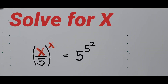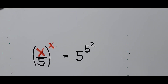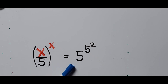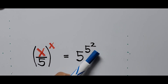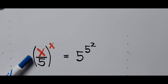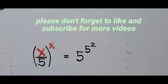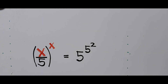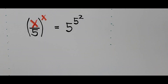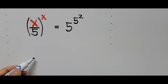Hello everyone, welcome to Quasiano Easy Math. We have here an exponential equation to solve: x divided by 5, to the power of x, is equal to 5 to the power of 5e squared, and we're looking for the value of x. For those new to my channel, please don't forget to like and subscribe for more videos — I would appreciate it. Now let's start solving the equation.